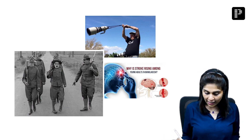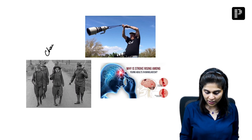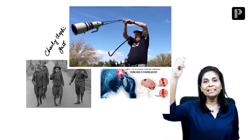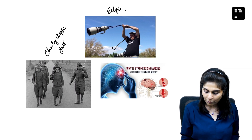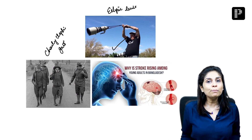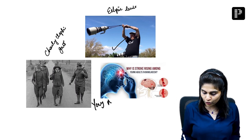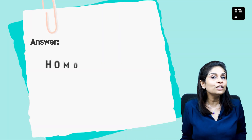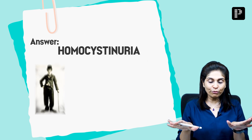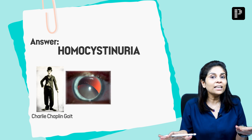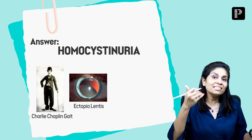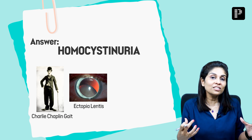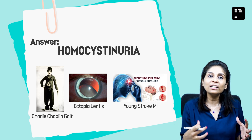For those of you who have come back: one image is of Charlie Chaplin walking — that is Charlie Chaplin gait. Another image shows a person swirling the lens outside, which stands for ectopia lentis. The third image talks about young stroke and young MI. So this triad — Charlie Chaplin gait, ectopia lentis, and young MI/stroke — the answer is homocystinuria. Homocystinuria is characterized by flat foot, hence Charlie Chaplin gait, ectopia lentis with inferonasal dislocation of the lens, and accelerated atherosclerosis and thrombosis presenting as young stroke and young MI.